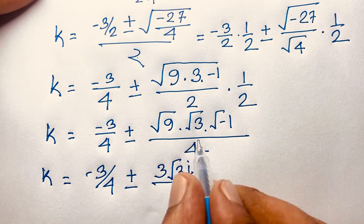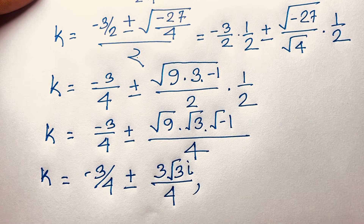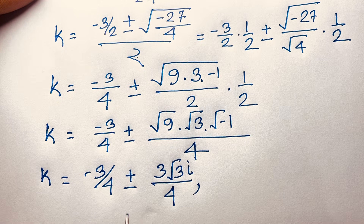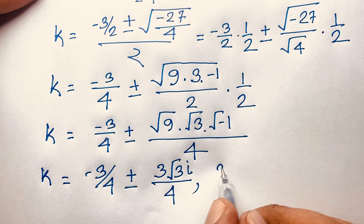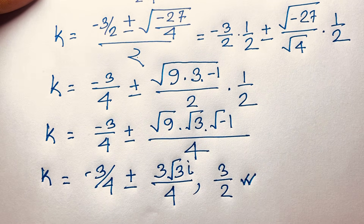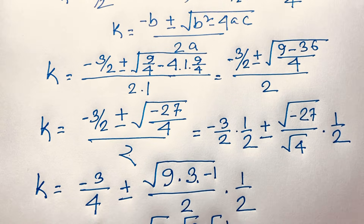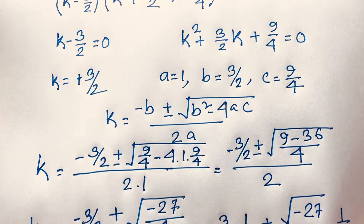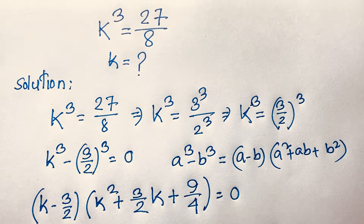This is our final answer. The complex solutions are k = −3/4 ± (3√3·i)/4, and the real solution is k = 3/2. Thank you all — if you enjoyed this video please subscribe to my channel. Goodbye, take care!